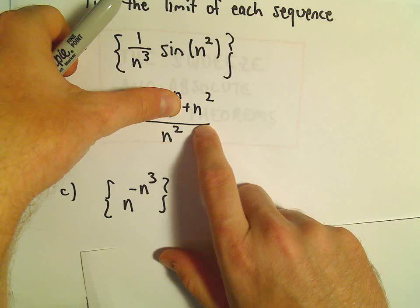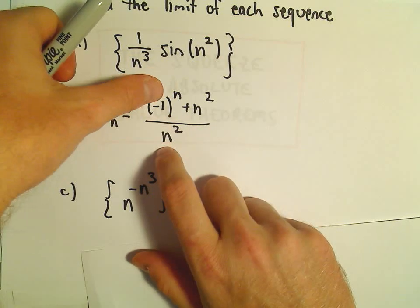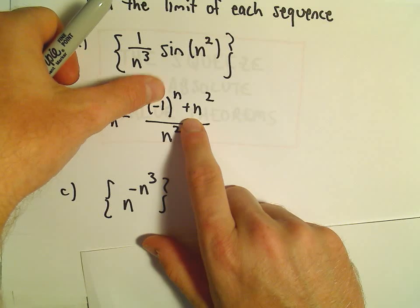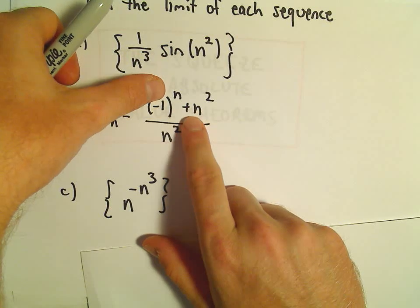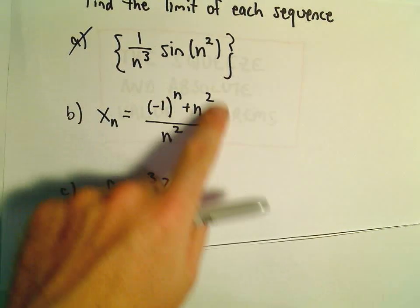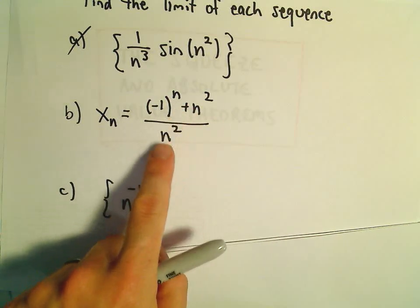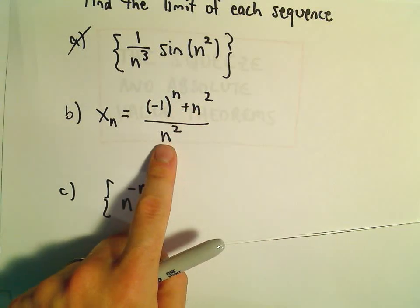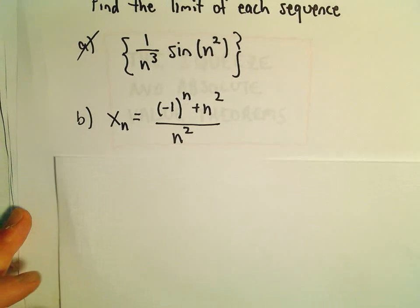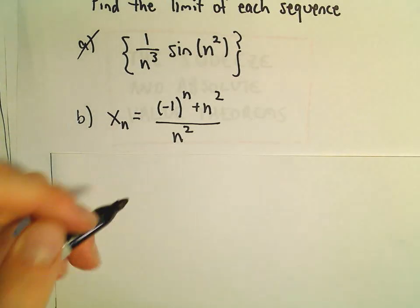What's going to happen with the negative 1 to the n? All that's going to do to the numerator is either subtract 1 or add 1. So for large values of n, the numerator and the denominator are almost going to be exactly the same value, which makes me think this limit should equal 0.